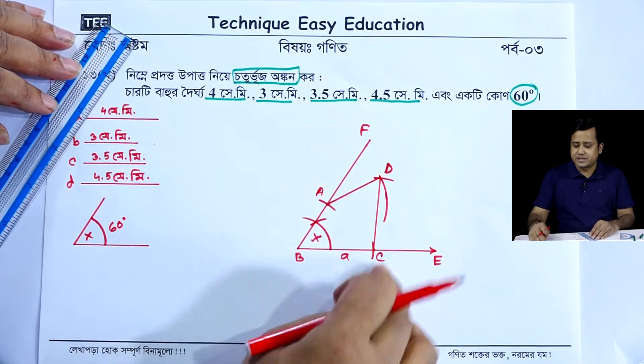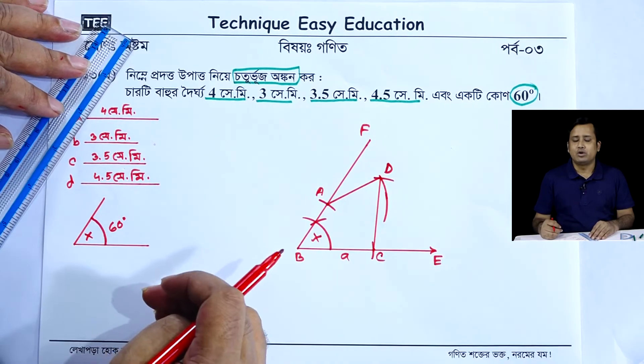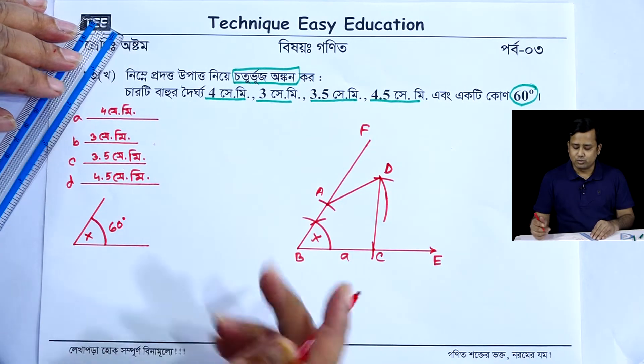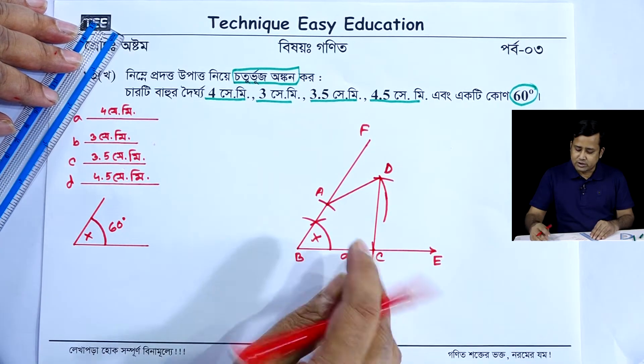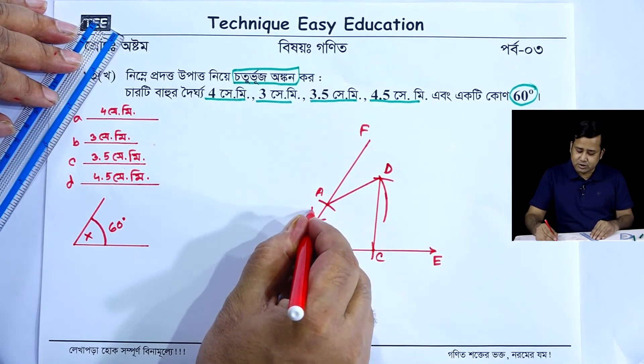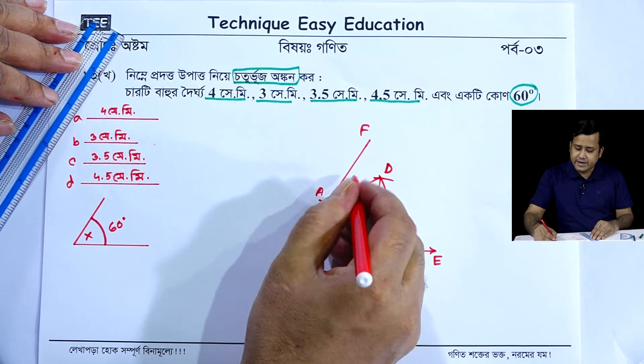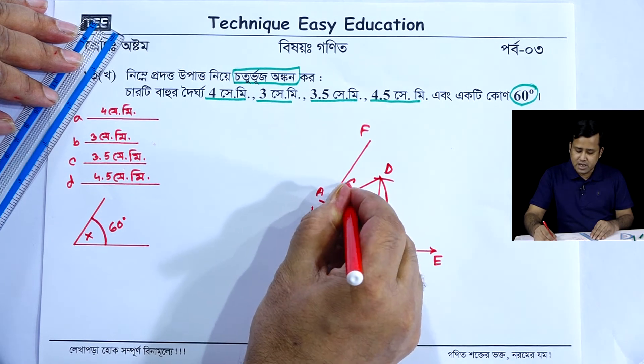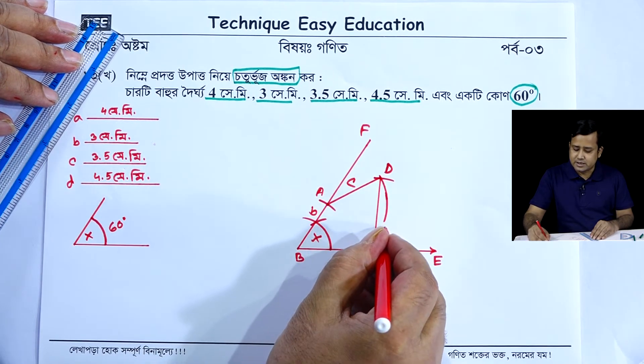A, B, C, D — can't be A, C, D. A, B, C, D can't be A, C, D — will get this. This is C and this is D.